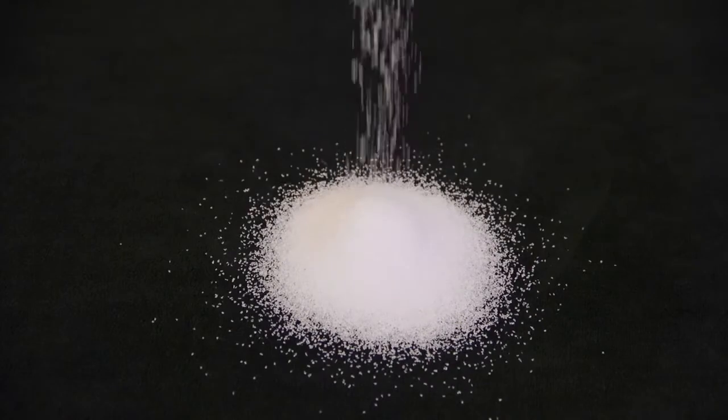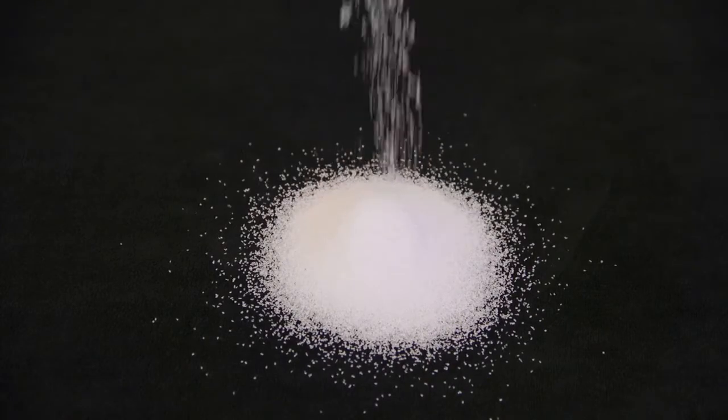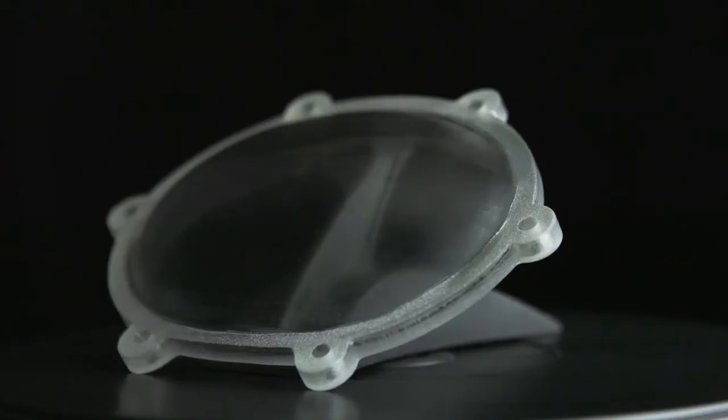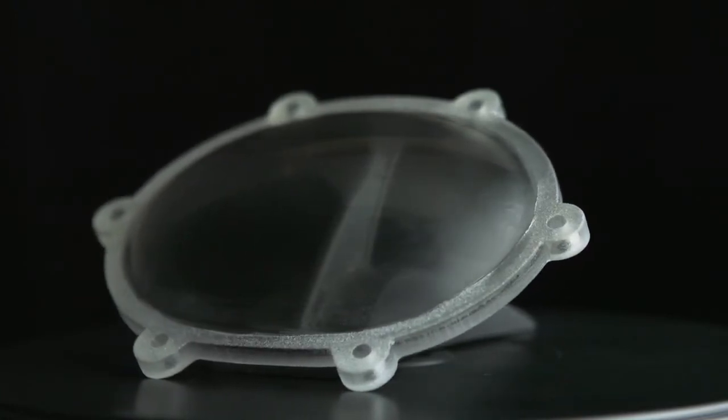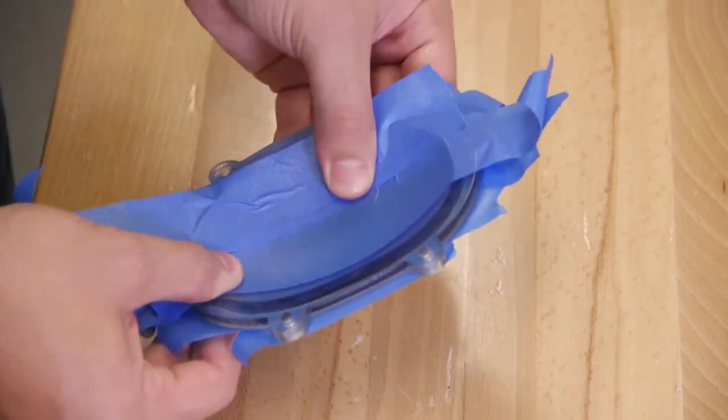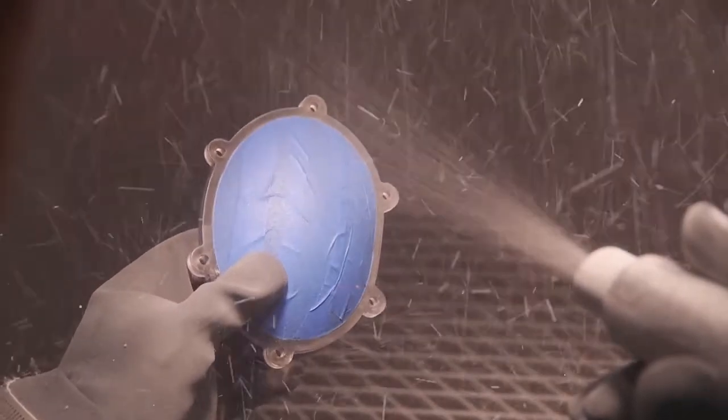Media blasting is not generally recommended because it can create small pits in the model surface. However, for a frosted surface finish, mask the parts of the model you do not want to look frosted and then media blast the unprotected area.